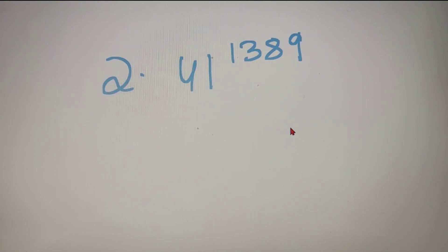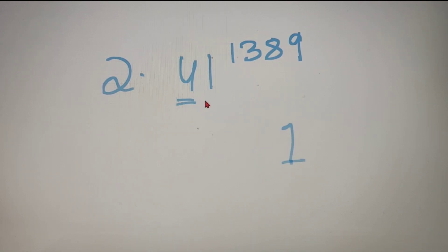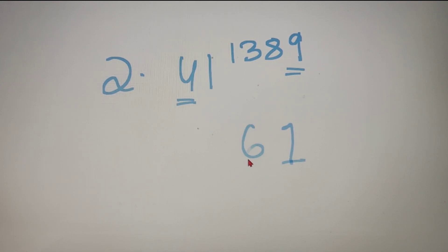The last digit will be 1 irrespective of the case, and the second last digit will be the unit digit of 4 × 9. The unit digit of 4 × 9 is 6. So the last two digits of 41^1389 is 61.